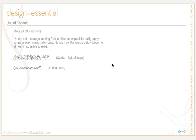Other things you never want to do when using all caps: do not set strange-looking fonts in all caps — especially calligraphy, script, or even many italic fonts. Notice how the words below become almost impossible to read. This is set at Oxida 16 point in all caps and it's really very difficult to read. Here, the same font at 16 point but not set in all caps says 'Can you read me now?' — it's basically unreadable in all caps because of how it's used.